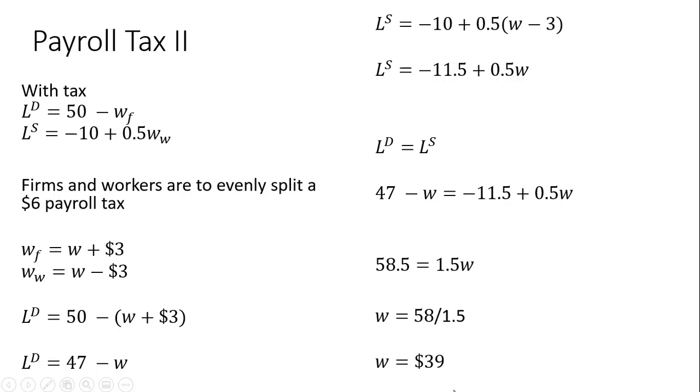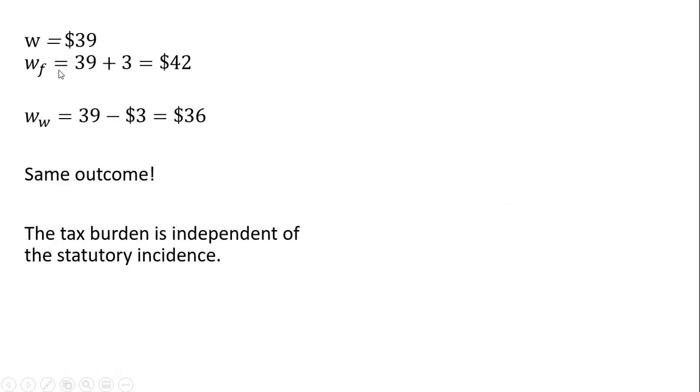The wage here is $39, but we're not done yet. We're interested to see what happens on an after-tax basis. For firms, firms do pay workers $39, but then the firm has to write a check to the government for $3, so the after-tax wage bill is $42, just like in our last example when firms were 100% responsible for writing the check. As far as workers are concerned, they receive $39 from the firm, but they have to send $3 to the government. We get the same exact outcome as before, and this leads us to the profound conclusion that the tax burden is independent of the tax law, that's the statutory incidence.